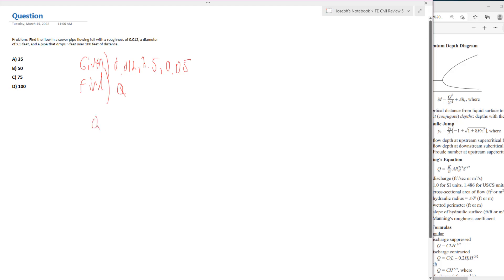Manning's equation is written out Q equals K over N times A, R to the 2 thirds of the hydraulic radius, and I'll talk about that here, and then S raised to the 1 half.